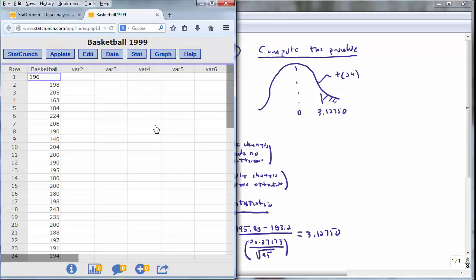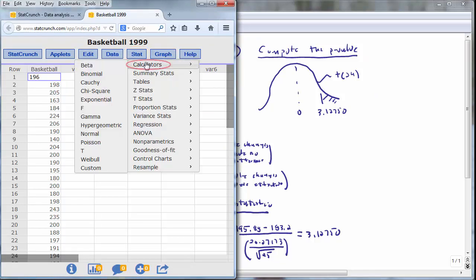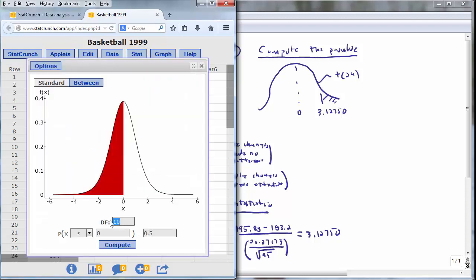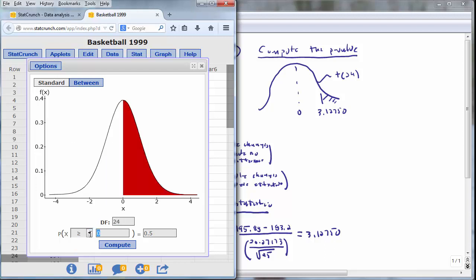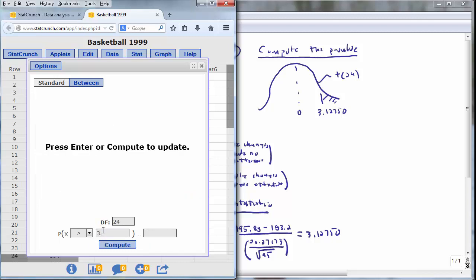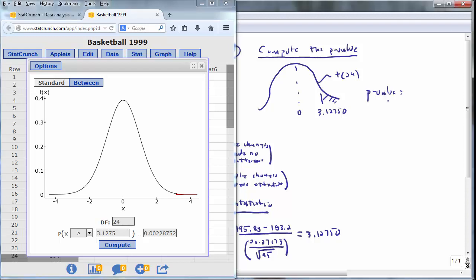So we should compute the area on the right tail of a student t-distribution with 24 degrees of freedom. And we can compute the p-value using the student t-distribution calculator in StatCrunch. We can find it under Stat Calculators T. We would enter the degrees of freedom, in this case 24, and we want to calculate the probability of being greater than 3.1275, so I will change the direction for the probability to being greater than, and then enter 3.1275, press Compute, and we obtain a p-value of .002287.